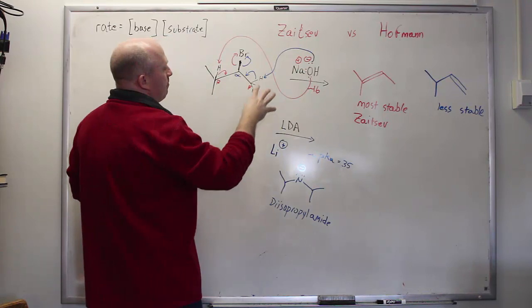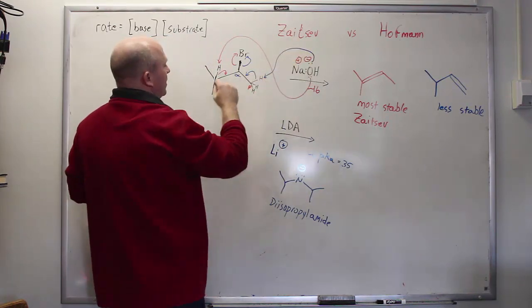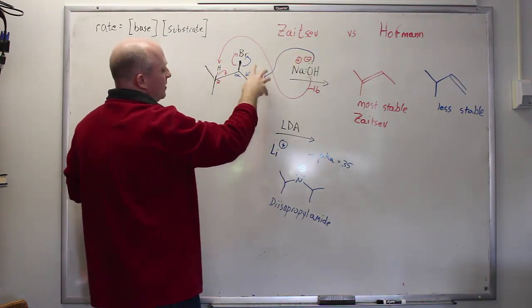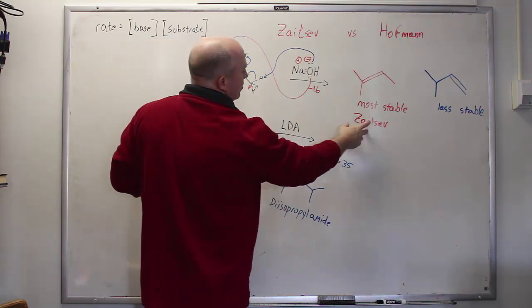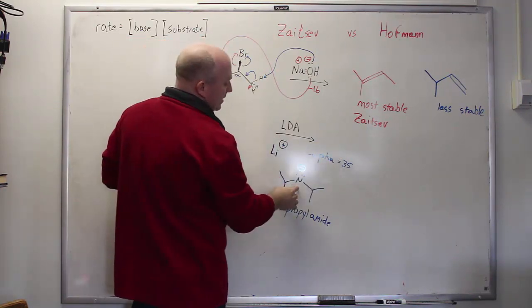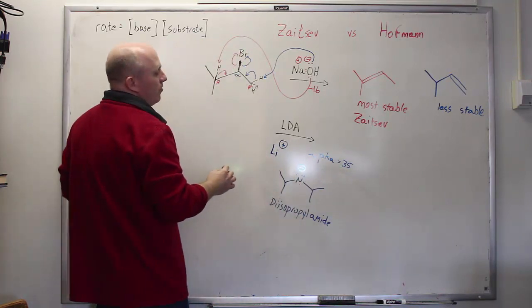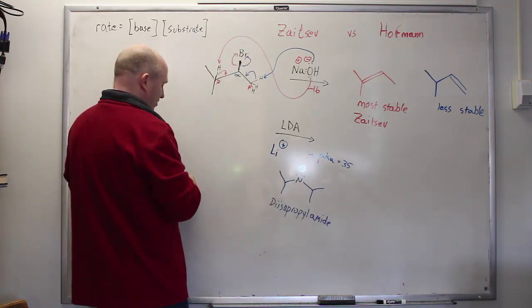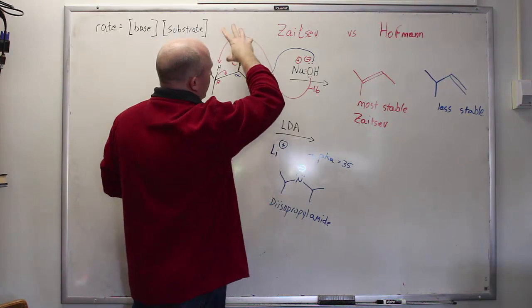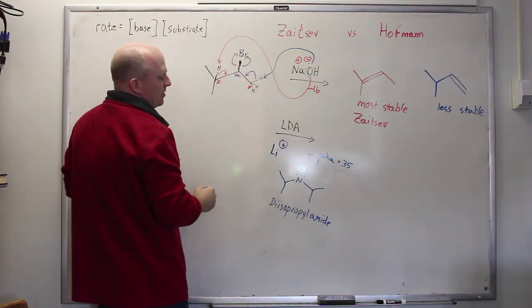But hydroxide is tiny. So it is a mild base, but it is small. It is easily able to get into these nooks and crannies and abstract the proton that will lead to the most stable thing. This is an enormous base, and it's also indiscriminate. It will simply remove whatever proton it encounters first, as long as that proton can be lined up in some way to give rise to the product.